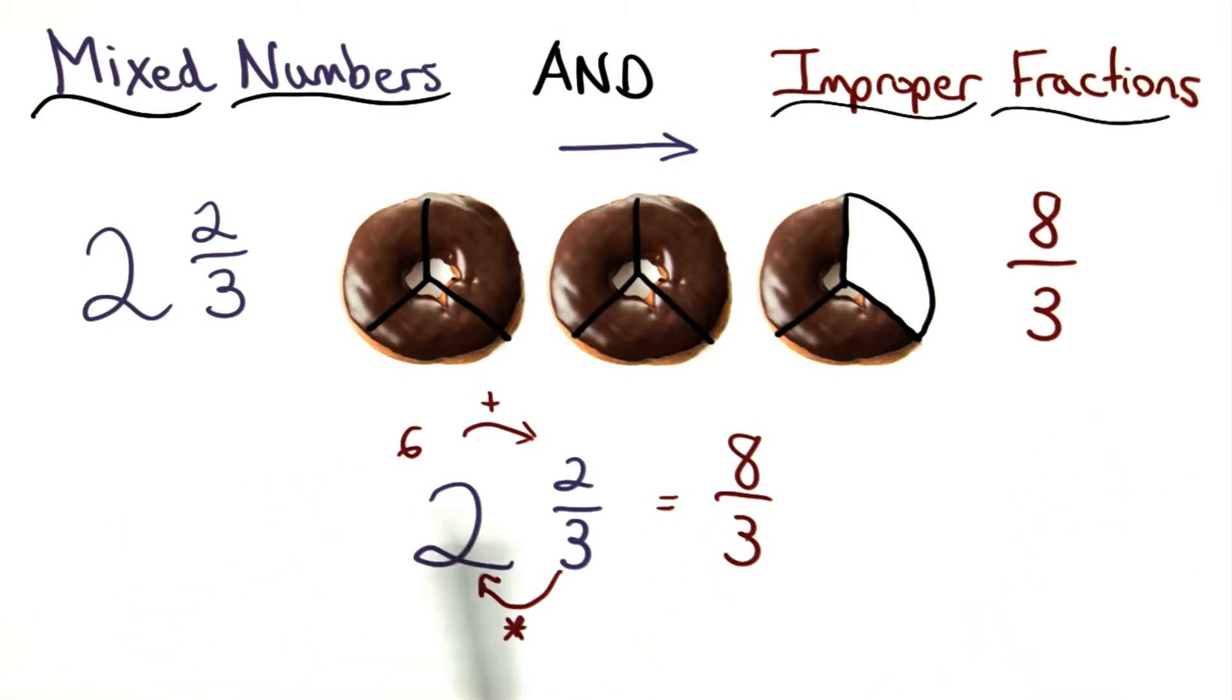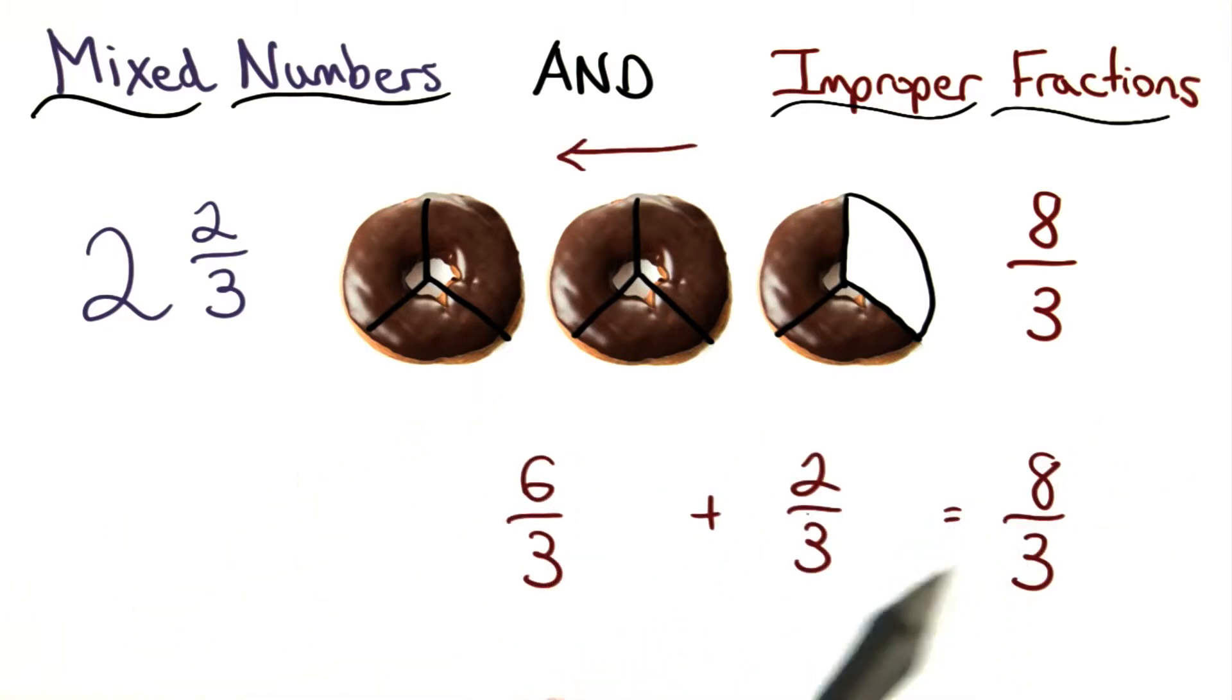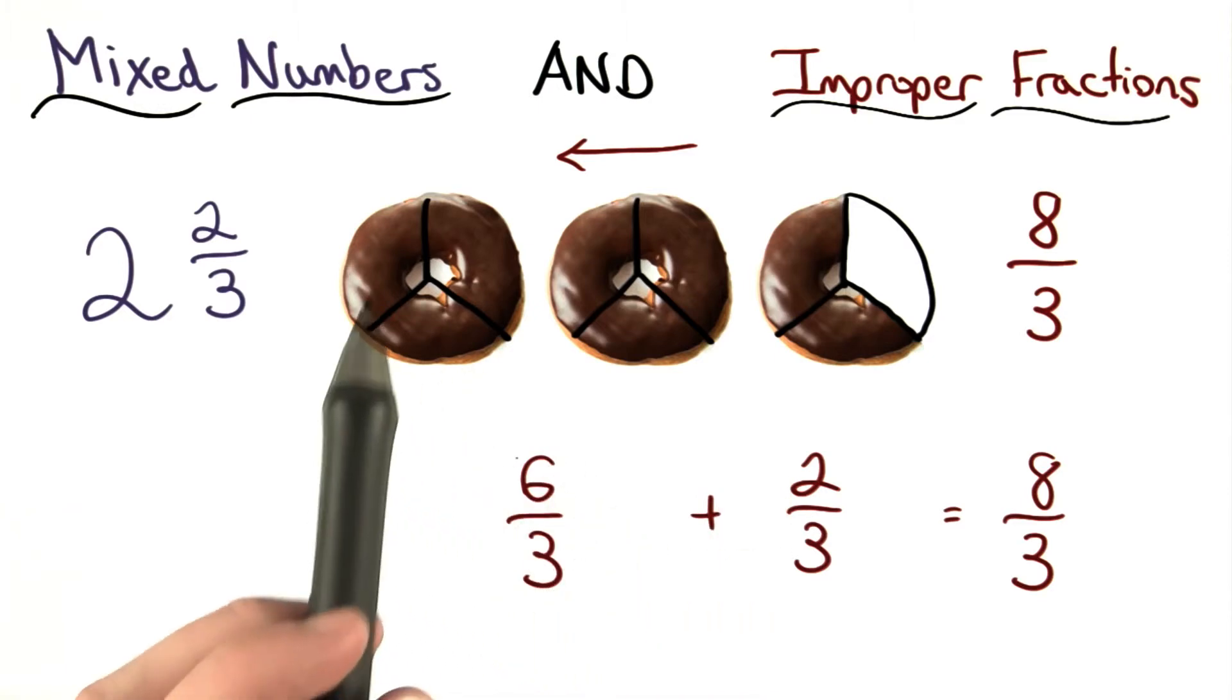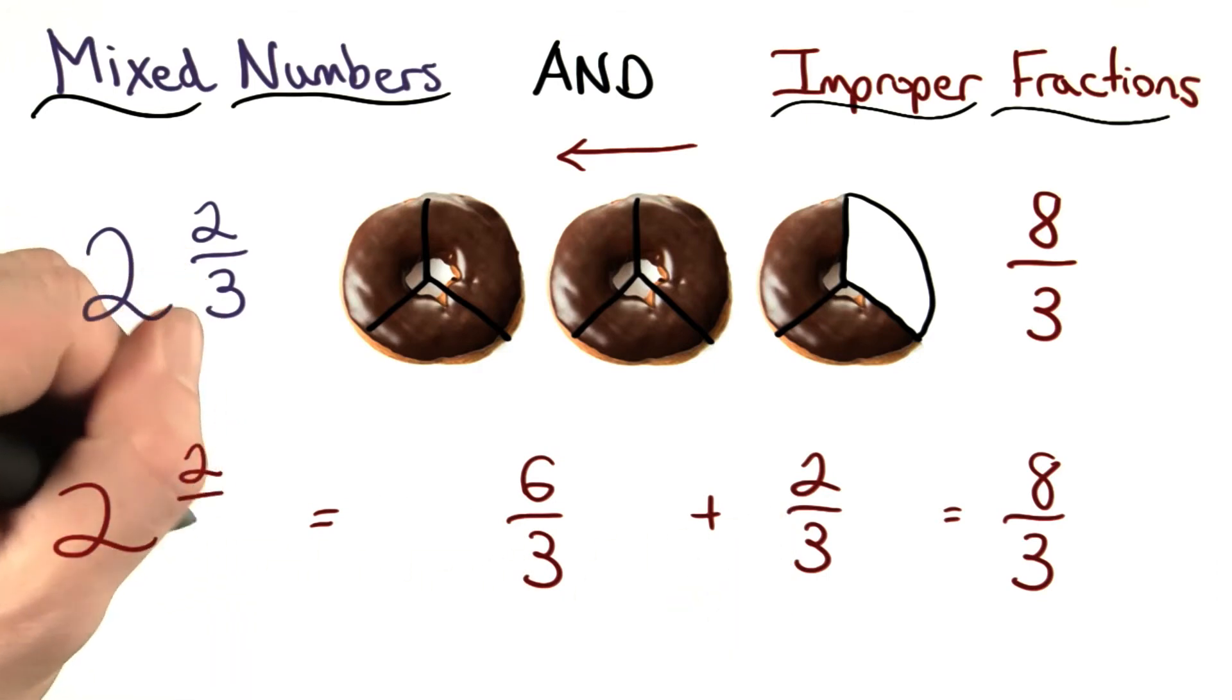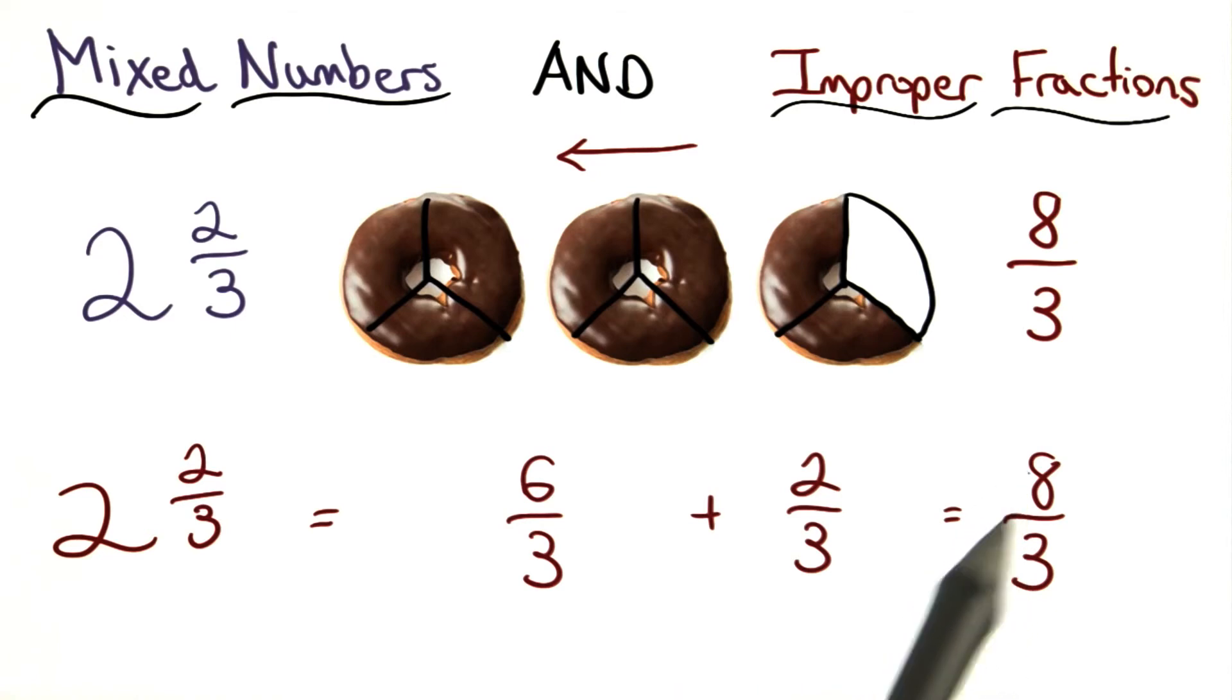Let's try going the other way. I can think about splitting 8 thirds into 6 thirds and 2 thirds. Notice that this 6 thirds represents my 2 whole donuts. I know 6 divided by 3 makes 2, and then I have my 2 thirds left over. So 2 and 2 thirds. This also makes sense because I know 3 goes into 8, 2 full times, and then I would have a remainder of 2, or 2 thirds left over.